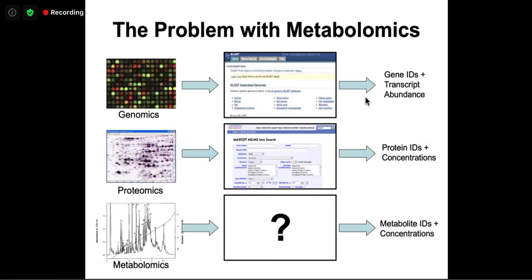The key problem in metabolomics has traditionally been the lack of databases or servers to access databases so you could upload spectra and get an answer. Today you were given examples where you could upload spectra into BASIL, GC-AutoFit, and MetaboAnalyst R to get metabolite identifications and concentrations. That problem is slowly being overcome, but all of those servers depend on databases.